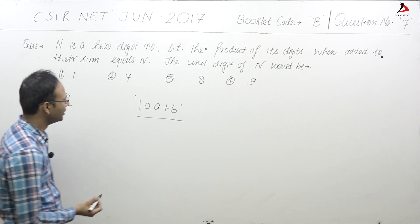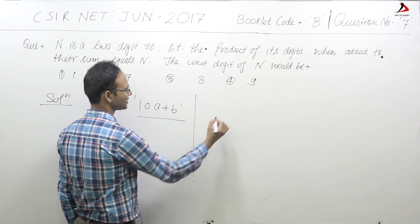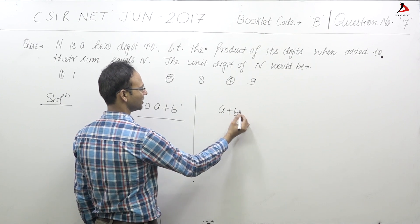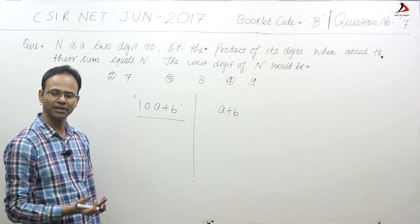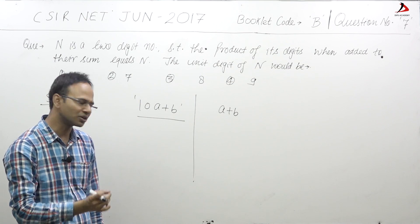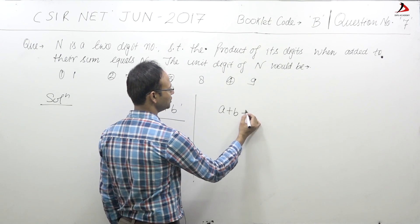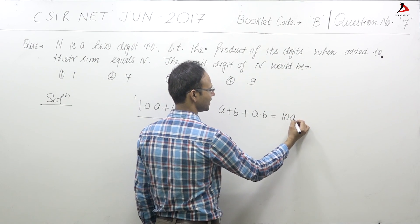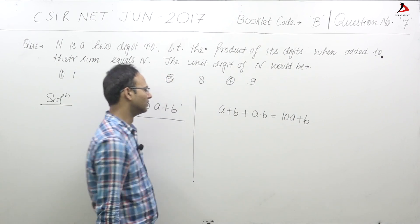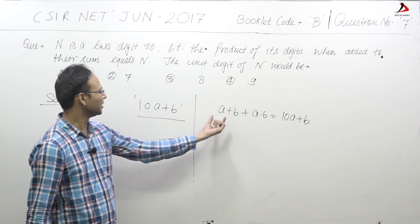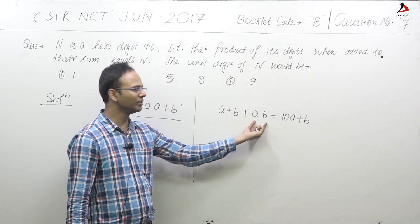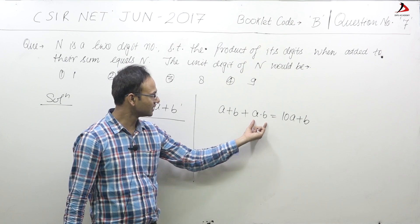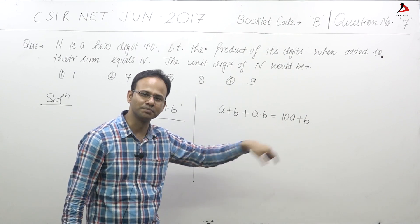Now according to the question, if we form an equation, the question says the sum of the digits is A plus B and product of the digit is A into B, which is equals to the number itself, that is 10A plus B. A plus B is the sum of the digits, A into B is the product of the digits, and the number itself is 10A plus B.